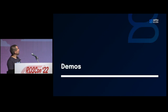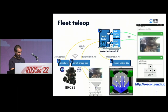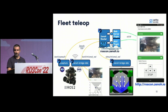Here are the demos we're running at booth number 32. The first is fleet teleoperation. We have a real robot with a camera, a DDS bridge running with the scope bot1, and a Xeno capture application that gets camera frames one by one, encodes them in JPEG, and publishes those JPEG images to Xeno on a specific path.